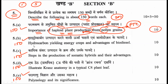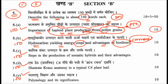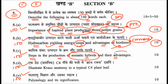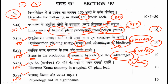The second sub-question covers hydrocarbon-yielding energy crops and the advantages of biodiesel — a current topic question. You must describe which plants are hydrocarbon-yielding crops, how they are used to produce biodiesel, and the advantages thereof, for 10 marks. The third sub-question asks for the steps in production of somatic hybrids and their advantages. We have a video on somatic hybridization on our channel — the link will be in the description box.